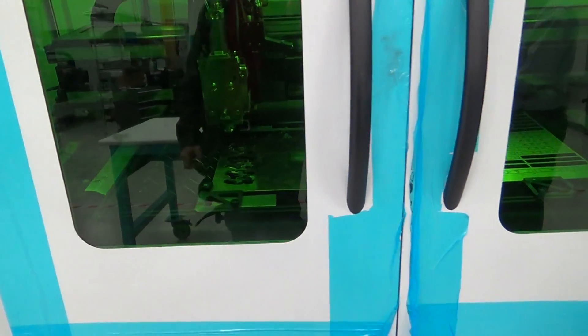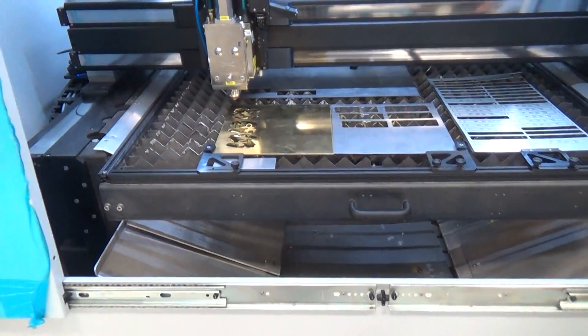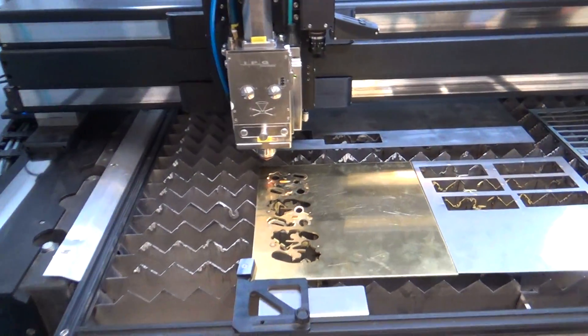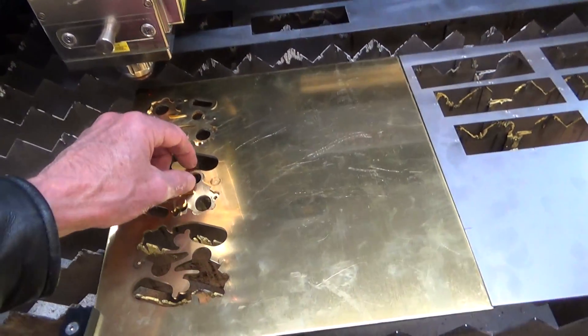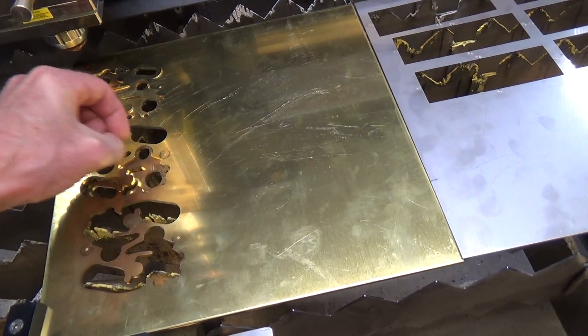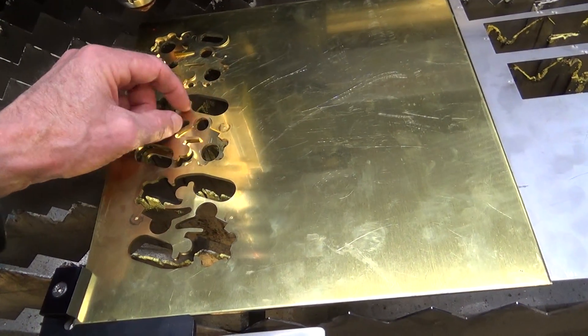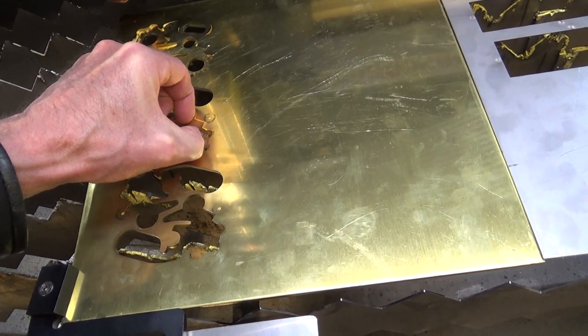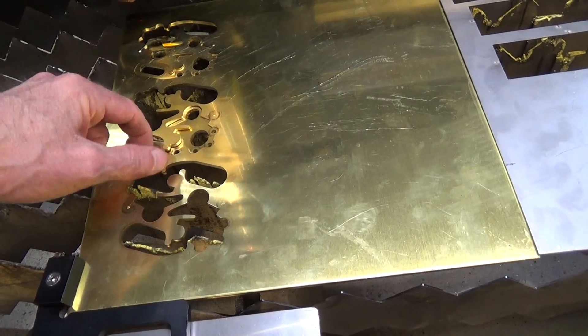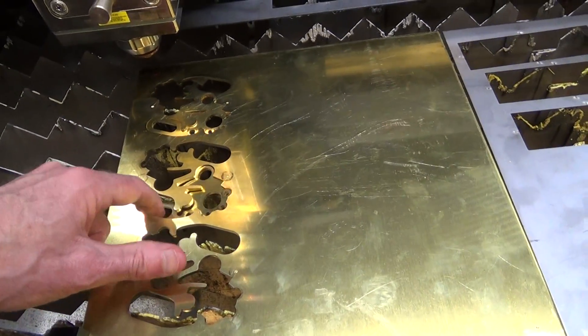There you go. We'll open it up, take a look at the part. This machine has the automatic doors that open up. And here, pour it out. You can see me get it out there. There you go.